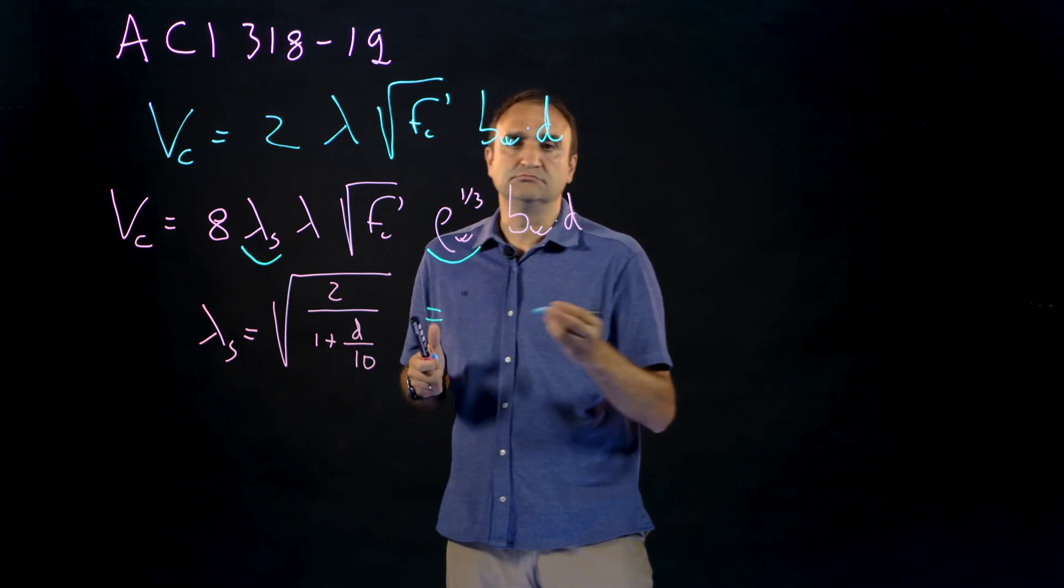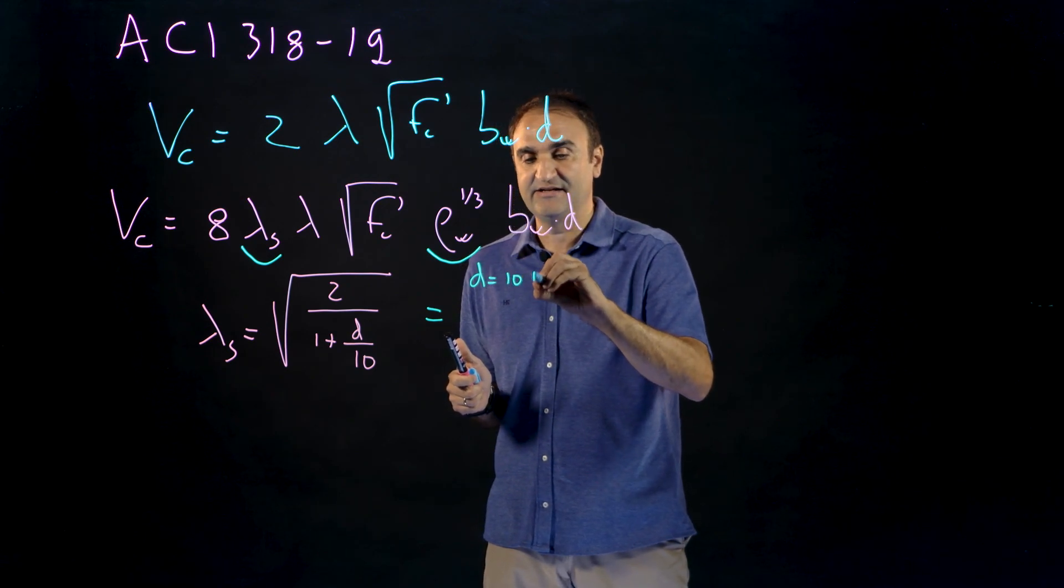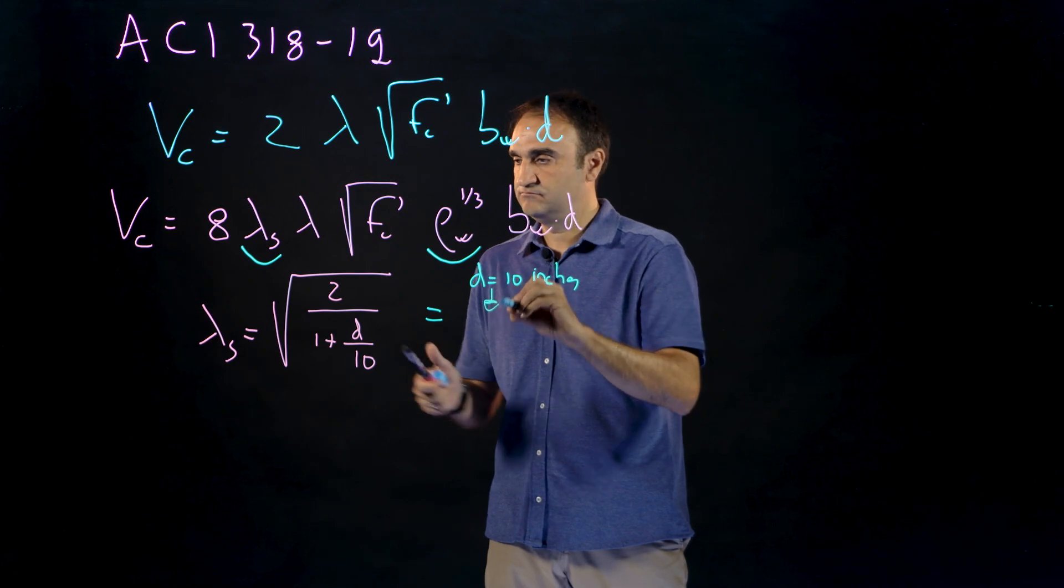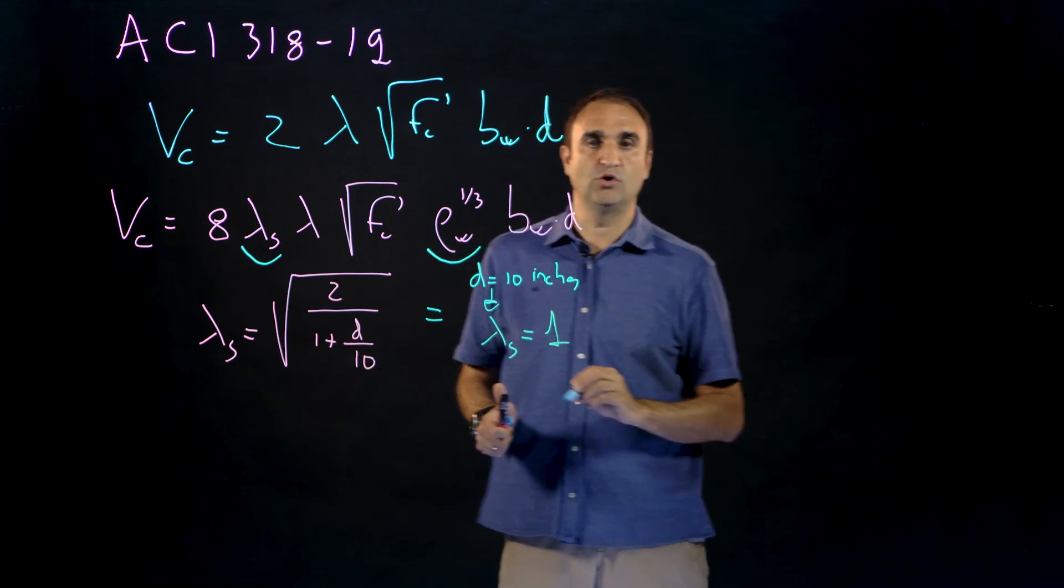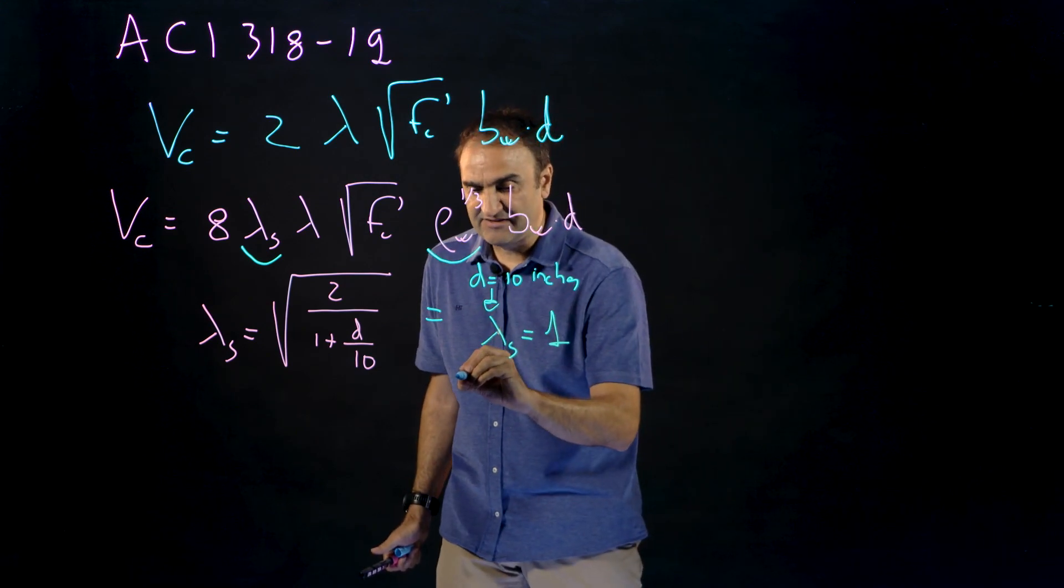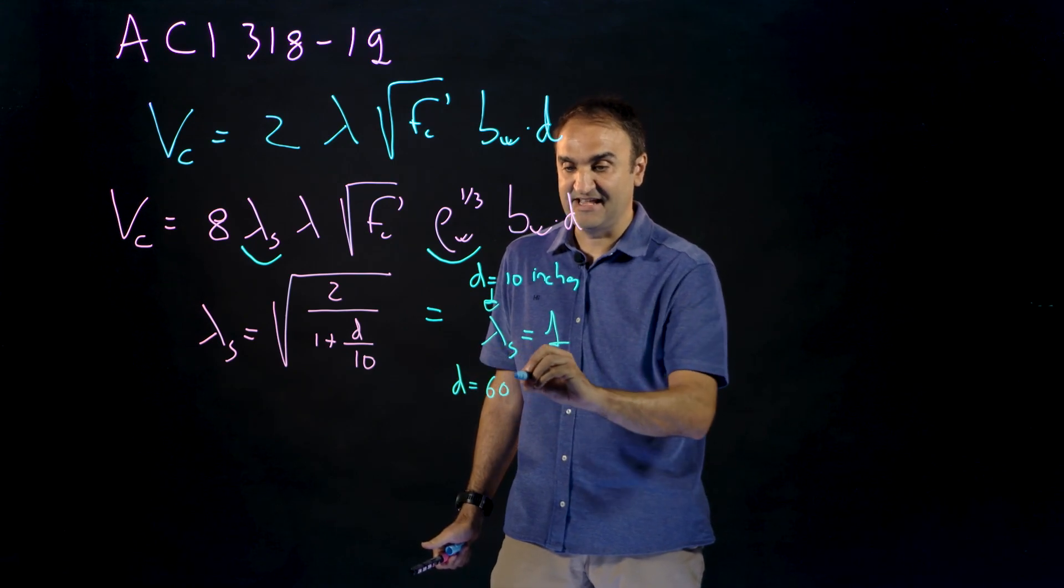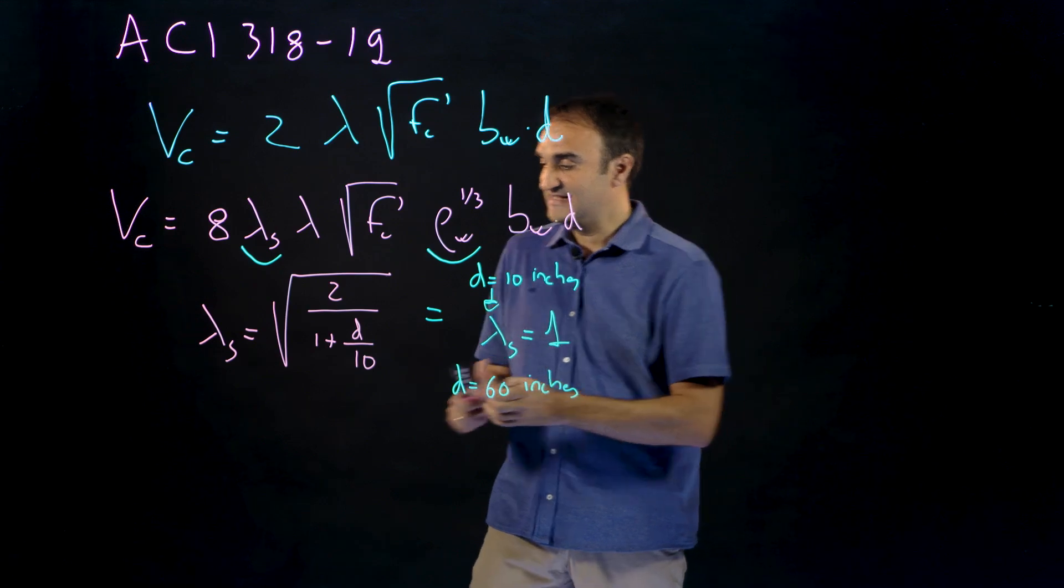Look, this is very important because if you have a small member, let's say d equal to 10 inches, then this factor is equal to 1.